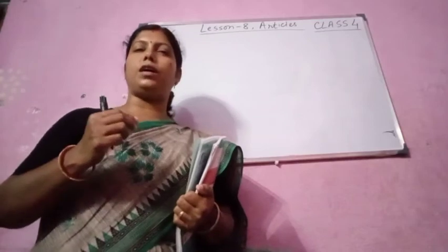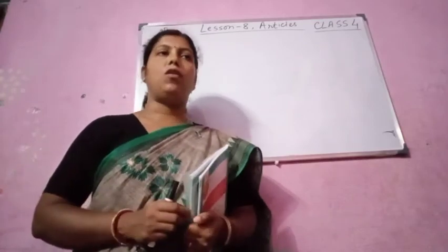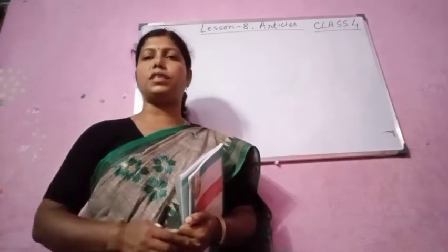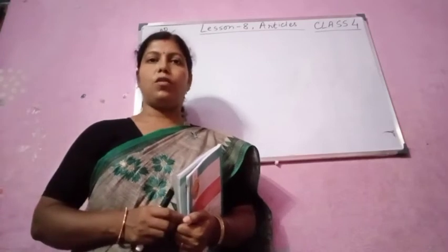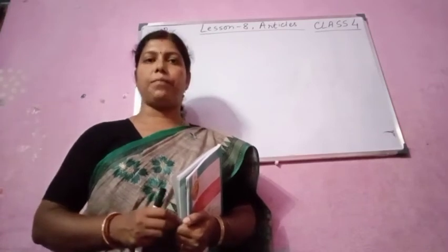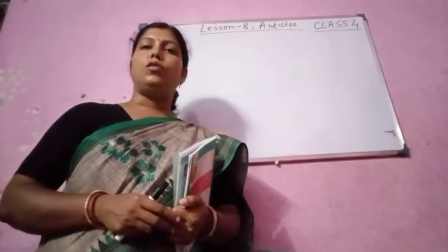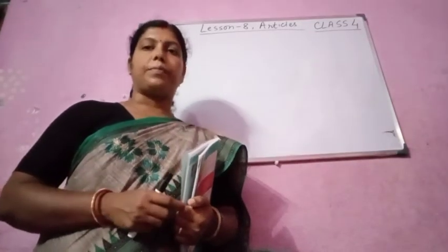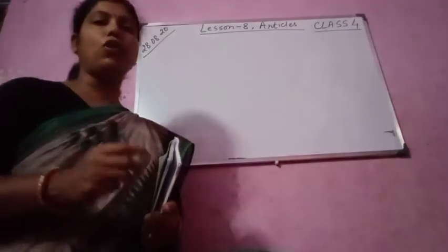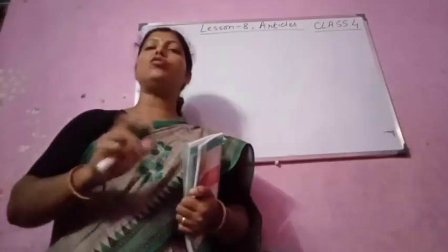Now let us see some examples of a. You say a university, a unicorn, he is studying in a university. Now before unit also, we are using a. You have already understood the use of a and an.